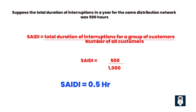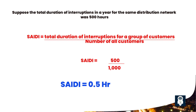On the other hand, SAIDI measures the average duration of interruptions experienced by each customer during a specific period. It is calculated by dividing the total duration of customer interruptions by the total number of customers served. Suppose the total duration of interruptions in a year for the same distribution network was 500 hours. The SAIDI would be 0.5 hours per customer per year — 500 divided by 1000 equals 0.5.